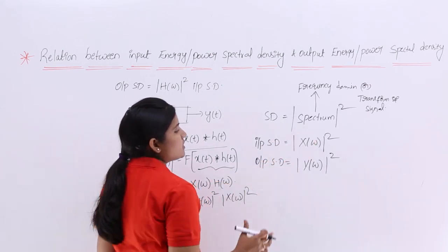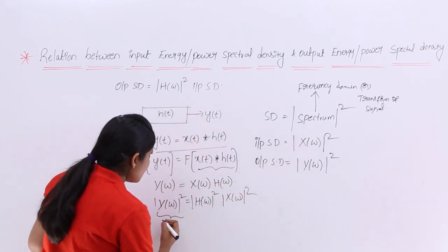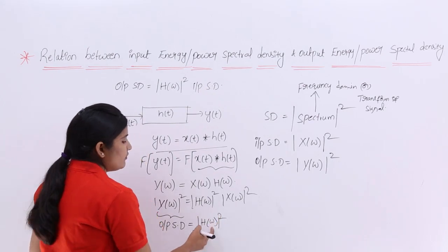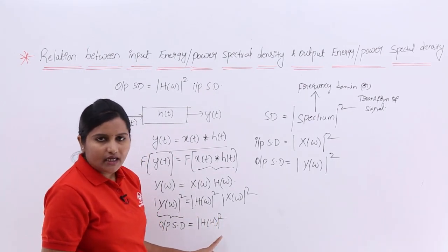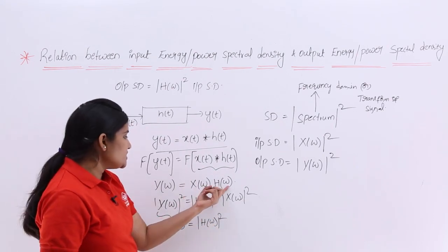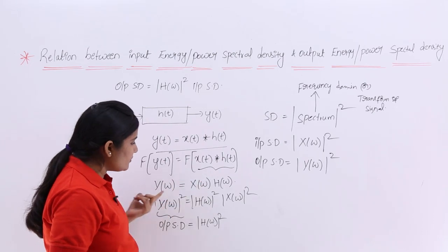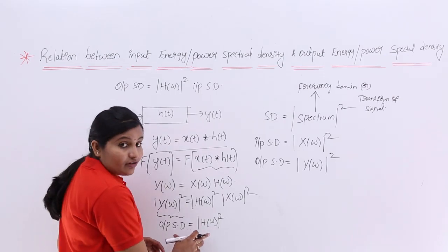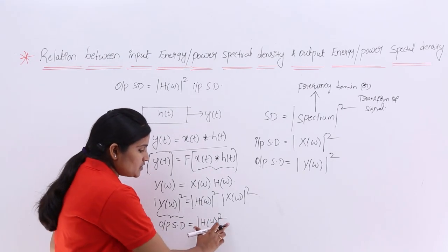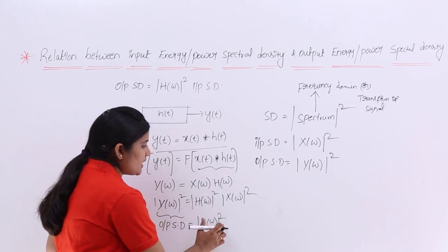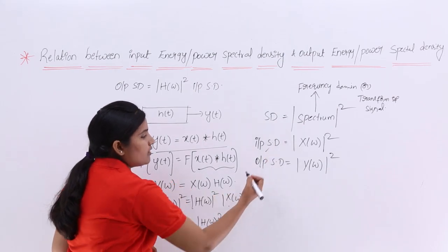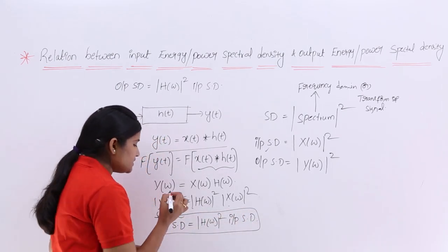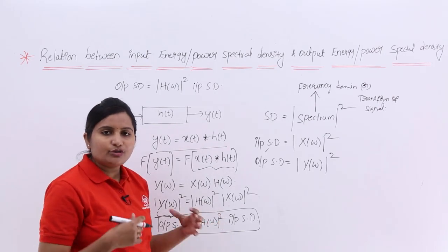According to the definition of spectral density, we can write this as: output spectral density equals modulus of H of omega whole square into X of omega whole square, which is the input spectral density. Here H of omega is the transfer function of the system, where H of omega equals Y of omega divided by X of omega. So the output spectral density equals the transfer function squared into the input spectral density.